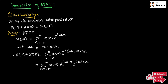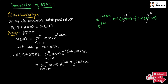Here, we can write exponential to the power of minus j 2 pi k n as cos(2 pi k n) minus j sin(2 pi k n). In this equation, cos(2 pi k n) will always be equal to 1 and sin(2 pi k n) will always be equal to 0. Therefore, we can say exponential to the power of minus j 2 pi k n is equal to 1.